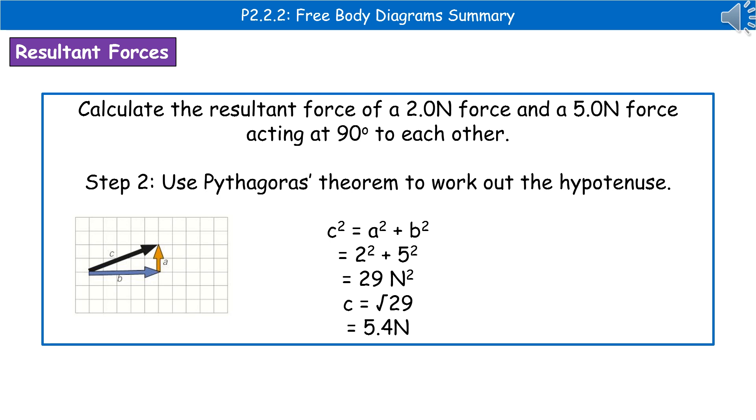If we just want to know C on its own, we need to take the square root. So the square root of 29 gives us C as 5.4 newtons, which is our resultant force.